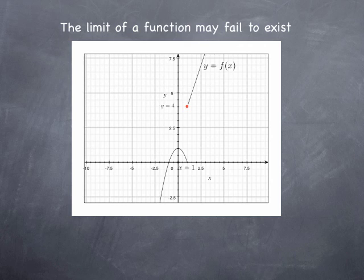So there is no way to approach a single number as x is approaching 1 without specifying from which side x is approaching 1. Therefore, the limit of the function at 1 does not exist.